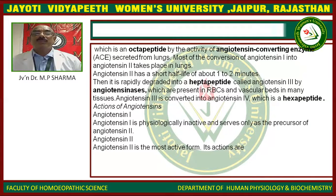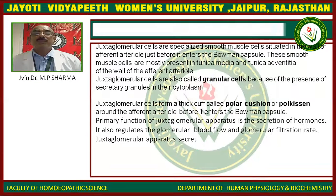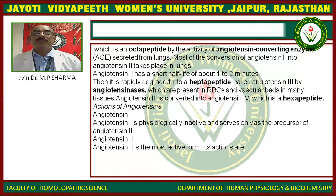Angiotensin-2 has a short half-life of about one to two minutes, after which it is rapidly degraded into a peptide called angiotensin-3 by angiotensinases present in RBCs and vascular blood. In many tissues, angiotensin-3 is converted into angiotensin-4, which is a hexapeptide.